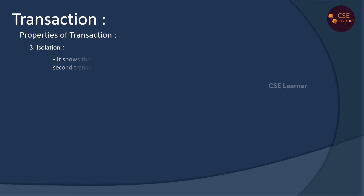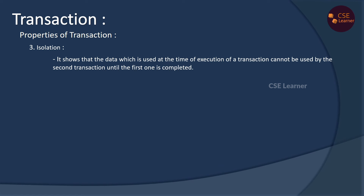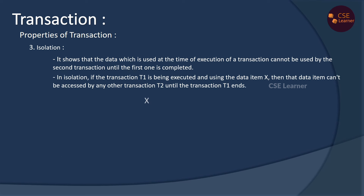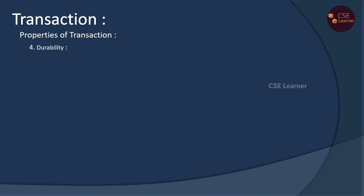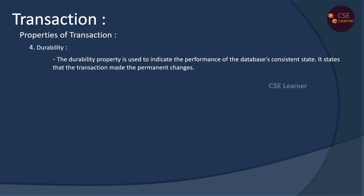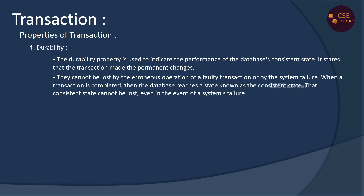Isolation means that when multiple transactions run concurrently on the database, one transaction should not be affected by another. If Transaction 1 is using a data item, Transaction 2 should not use the same data item at that time, otherwise it causes inconsistency. That is Isolation. Durability means that once a transaction is committed, the changes are stored permanently in the database. Even if a transaction fails afterward, the database remains consistent. That is Durability.